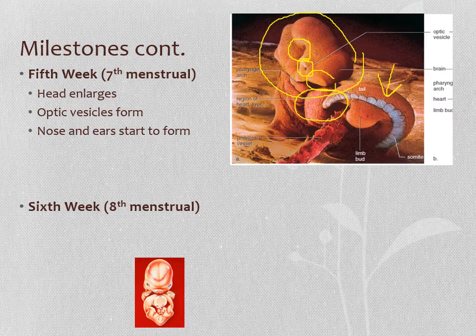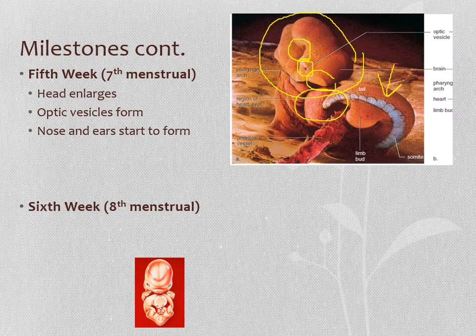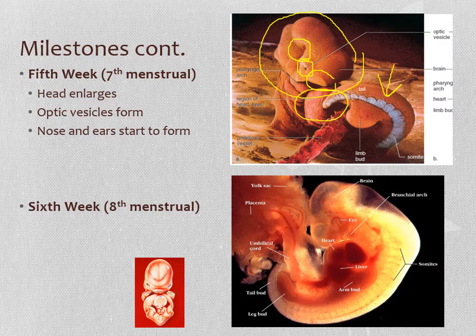In the sixth week, which is eight weeks pregnant, we look kind of like a little gummy bear, as you can see in the picture below. The heart and the liver are now starting to move inside the body. Fingers and toes are starting to form on these little tiny limb buds. And we're beginning to form the beginnings of a skeleton — you can kind of see the beginnings of the backbone forming. At this point you're about two centimeters in length, so a little less than an inch.